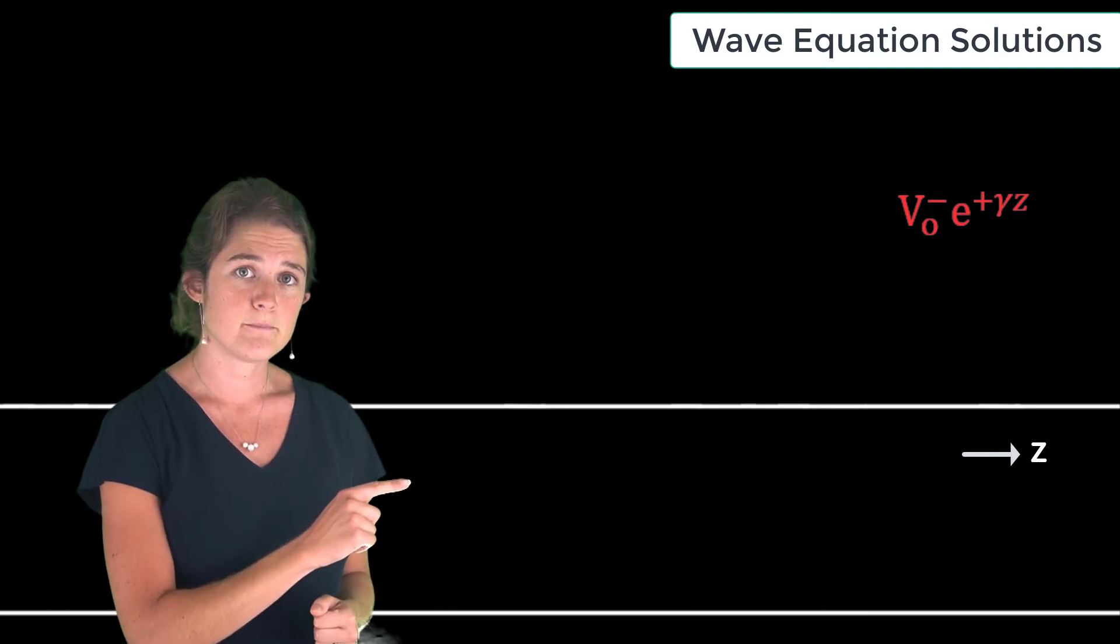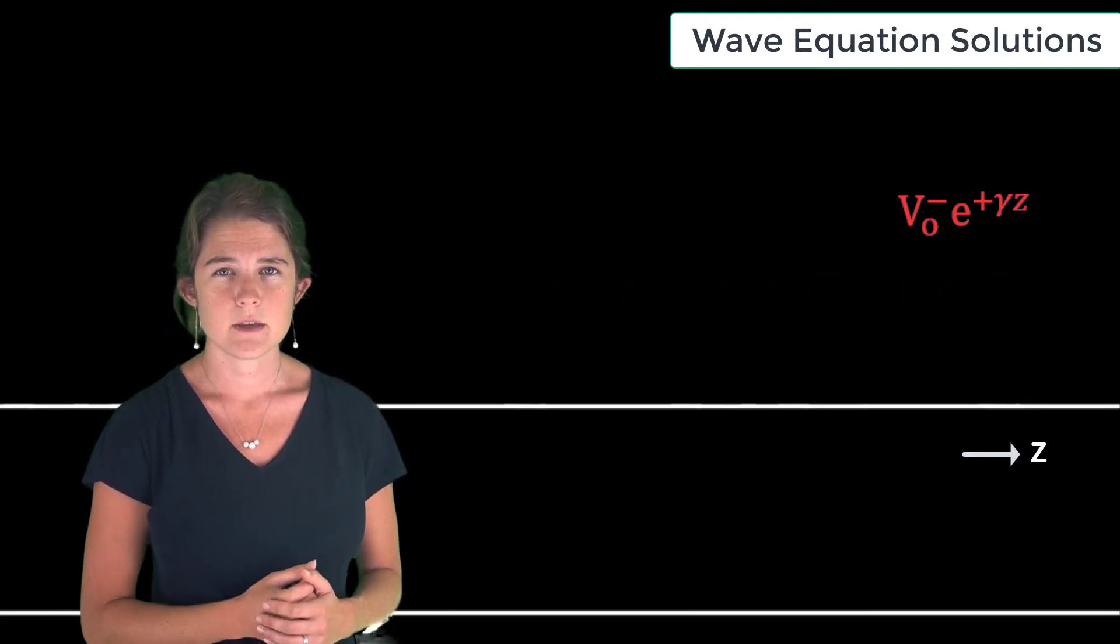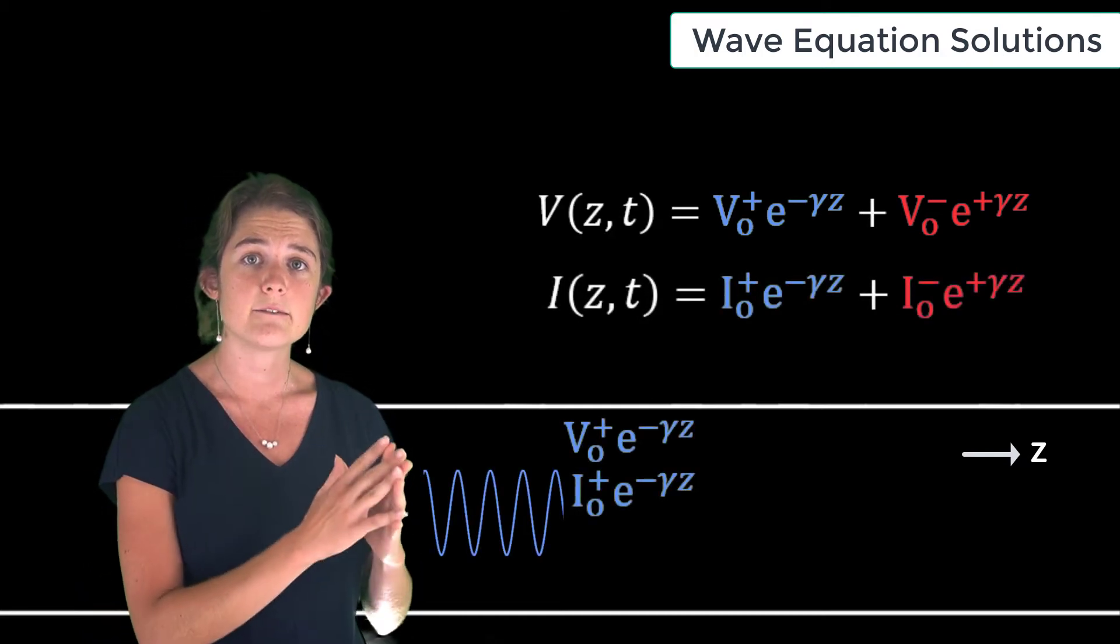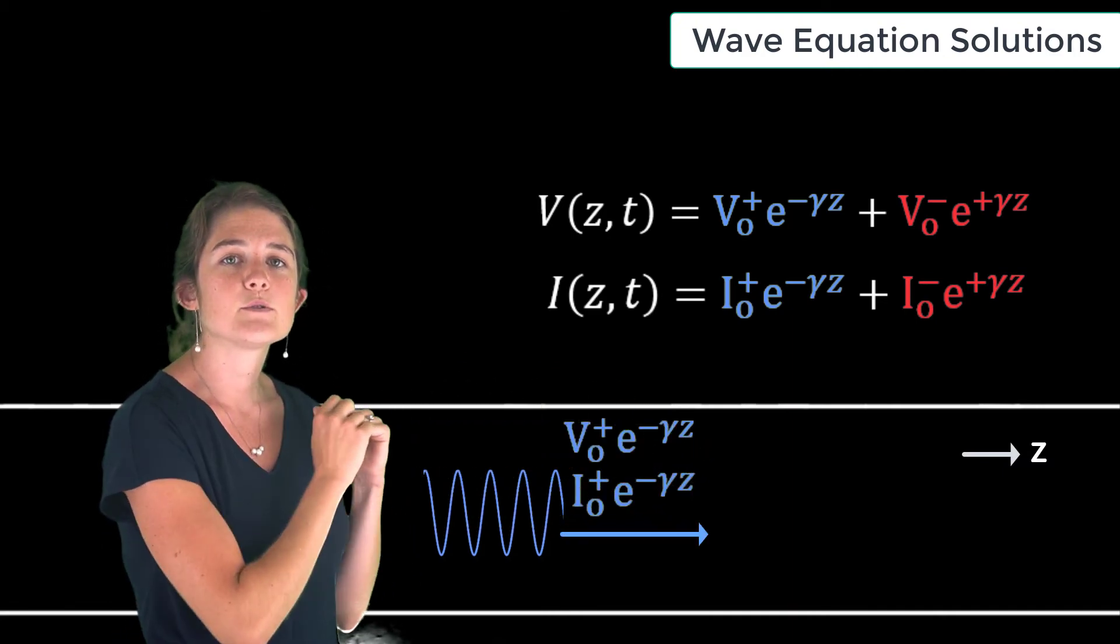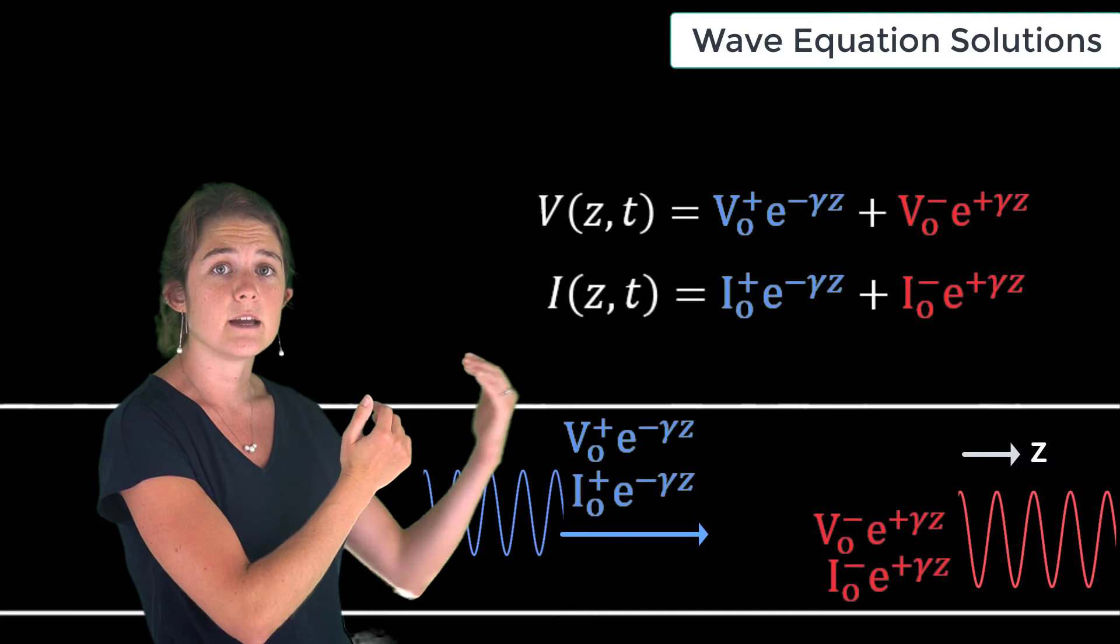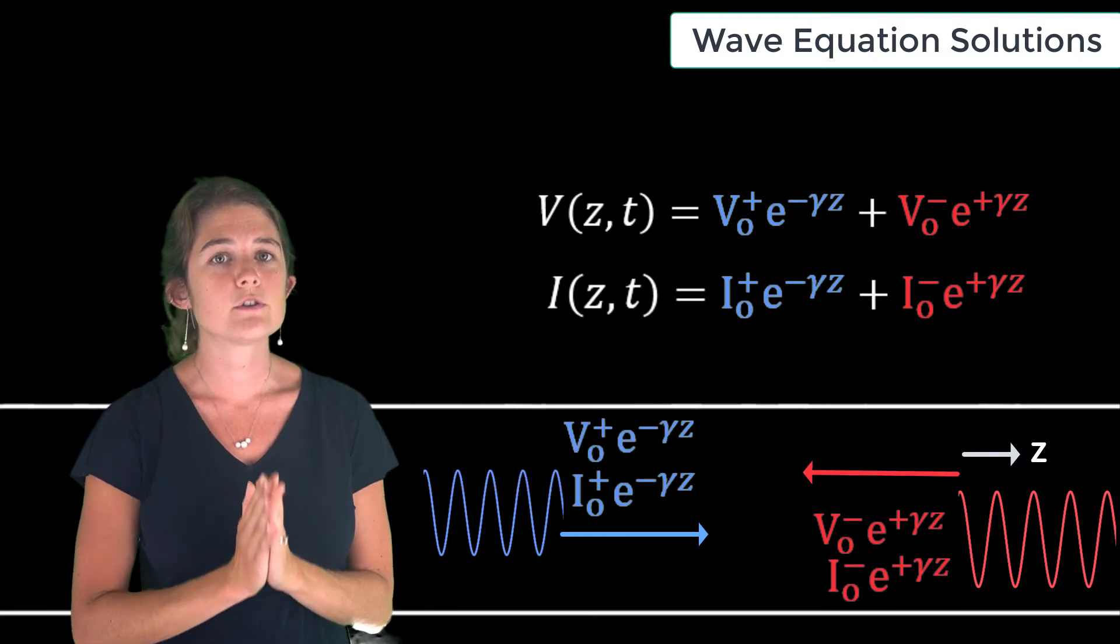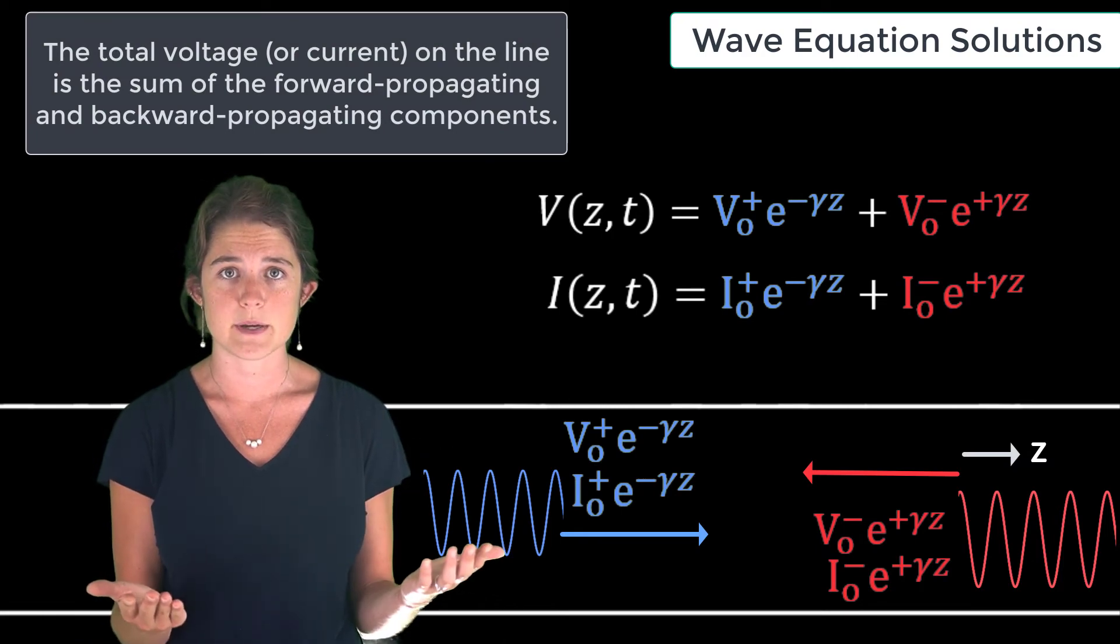terms with exponents of negative γz are propagating in the positive z direction, and the terms with exponents of positive γz are propagating in the negative z direction. The total voltage on the line is the sum of the forward propagating and the backward propagating components.